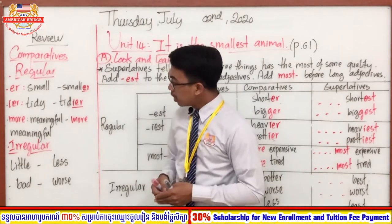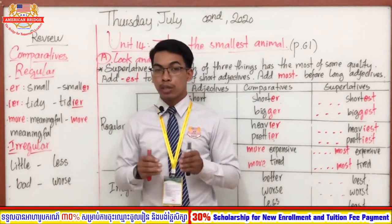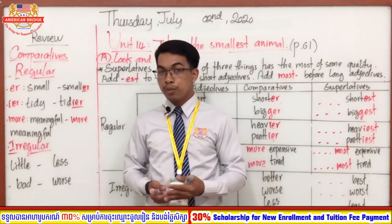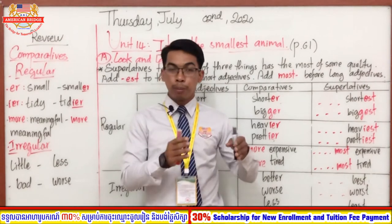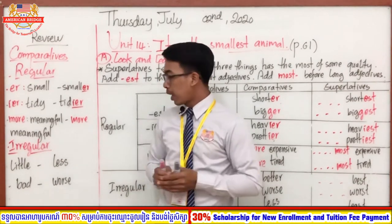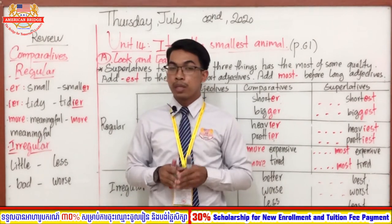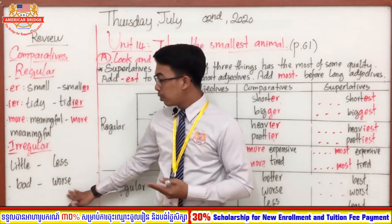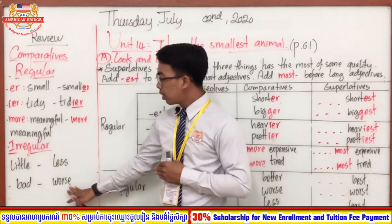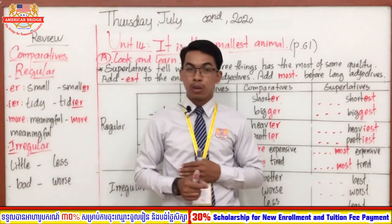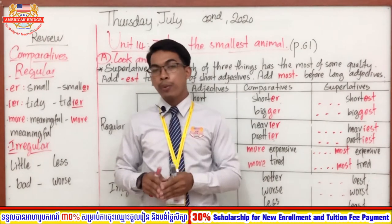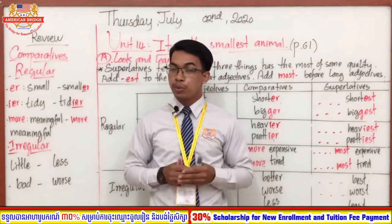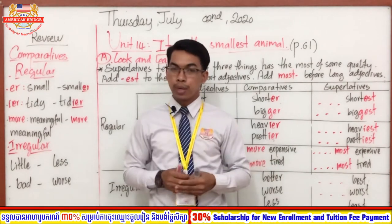Now let's move on to the irregular comparative adjectives. For irregular forms, we change the whole word. For example, the word 'bad' — we change it to 'worse' in the comparative form. You have to remember these irregular changes. Another example: the word 'little' — when we change to the comparative adjective, it becomes 'less'. Teacher believes you remember well how to change adjectives to their comparative forms.